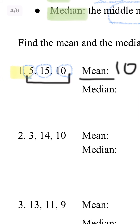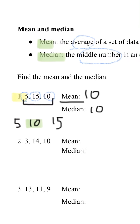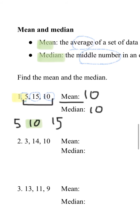Now let's find the median. List the numbers from smallest to largest. The middle number is 10, so your median is also 10.